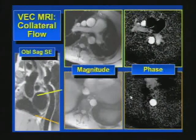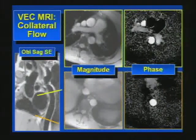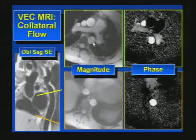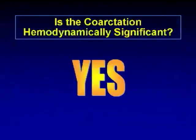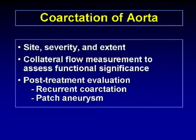Another important role of MR in coarctation is to measure collateral circulation, which determines if the coarctation is hemodynamically significant. We measure blood flow immediately distal to the stenosis and at the level of the diaphragm, using magnitude and phase images. A flow versus time curve in this patient shows much higher blood flow in the distal descending aorta compared to the proximal. The answer is yes — this coarctation is hemodynamically significant, because blood is coming through collaterals to the descending aorta, making diaphragmatic flow higher than proximal flow. MR is important for coarctation to determine site, severity, extent, and to measure collateral flow to assess functional significance.